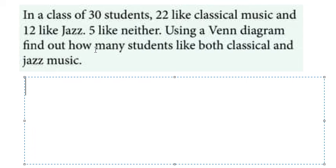Hello everybody, so today I will talk about statistics. The topic today is about union and intersection. Now I will show you how to answer: In a class of 30 students, 22 like classical music and 12 like jazz, 5 like neither. Using a Venn diagram, find out how many students like both classical and jazz music.